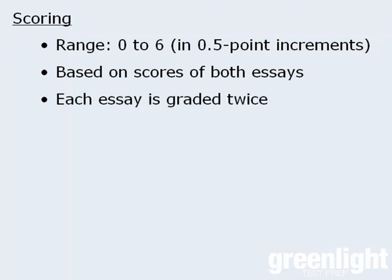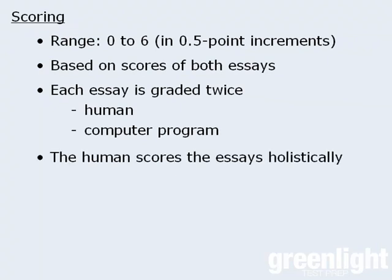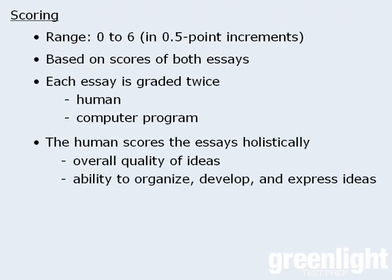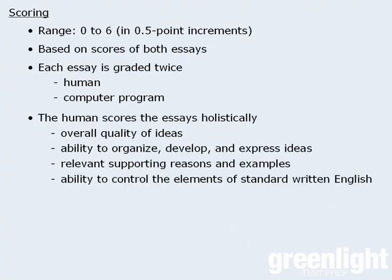Each of your essays will be graded at least two times — once by a human, and once by a computer program. The human marker is typically a college or university faculty member who will spend no more than two minutes reading each essay, and then assign a score holistically. In other words, there are no precise scoring rules such as a one-half point deduction for a spelling error, or a one-third point increase for a good idea. Instead, the reader uses a scoring guide to help rate the overall quality of ideas presented, the overall ability to organize, develop, and express those ideas, the relevant supporting reasons and examples used, and the ability to control the elements of standard written English.